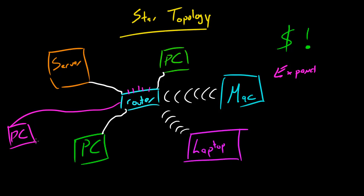So those are the benefits of a star network, or star topology, rather than a bus or a ring topology, which can be kind of confusing or expensive.